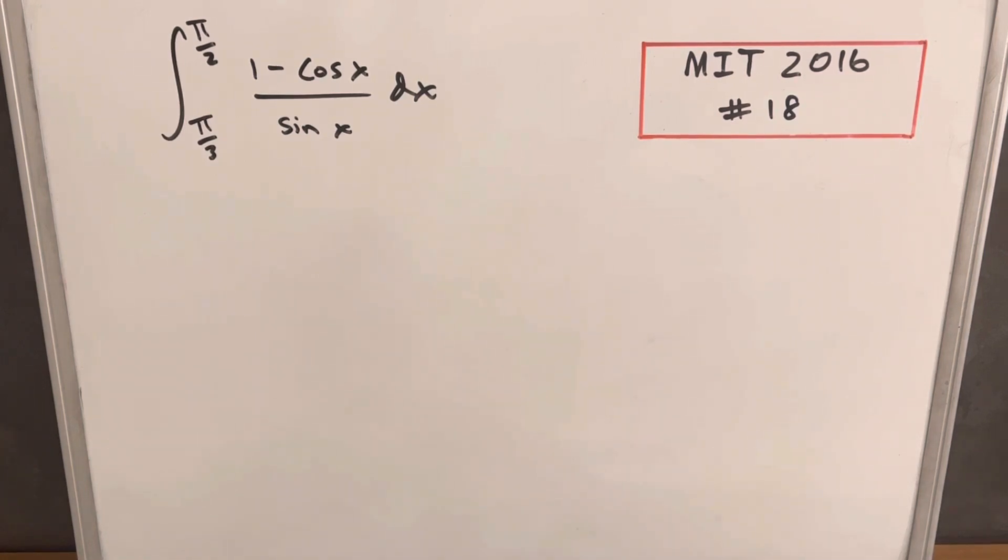Hey, we have another interesting integral, MIT 2016 problem 16. We have the integral from pi over 2 to pi over 3, 1 minus cos x over sine x dx.